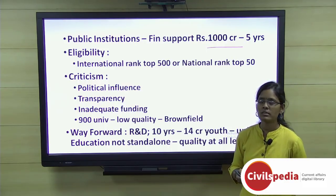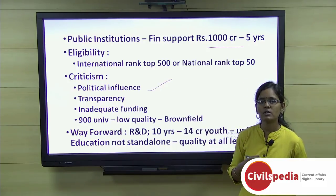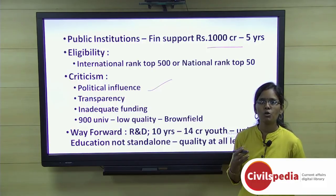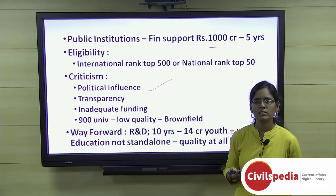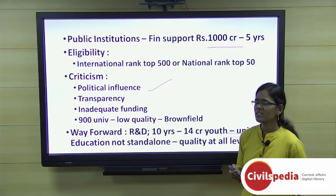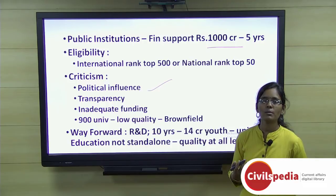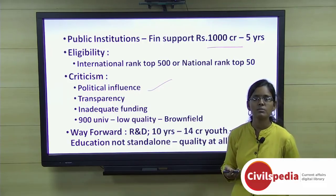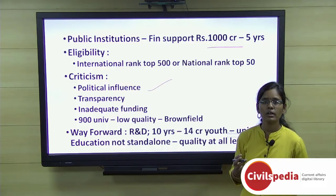Criticism of the Institutions of Eminence scheme includes political influence, as some selected institutes are seen to align with the ruling party's ideology, leading to reduced transparency. Additionally, ₹1,000 crore funding is considered inadequate to bring institutions to genuine global standards. The poor quality of existing universities remains a burden, and more focus should be on upgrading brownfield institutes.